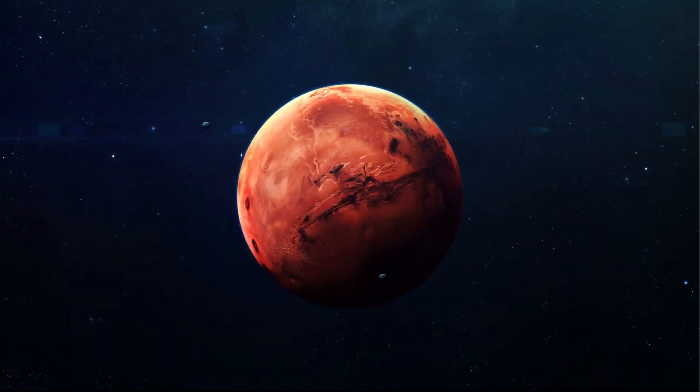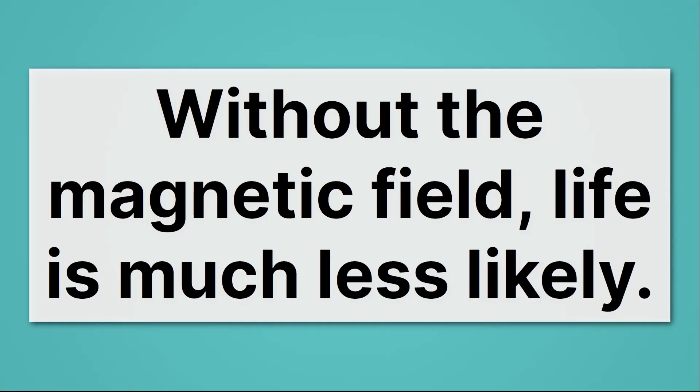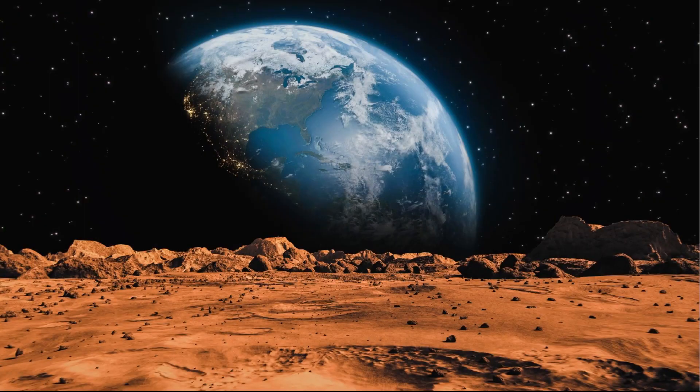That may be one reason Mars is lifeless. Mars doesn't have a magnetic field, and without the magnetic field, life is much less likely. When we compare the surface of Mars, it's barren and lifeless, and the surface of Earth is teeming with life. There are many reasons for this difference, but one that helps support the life of Earth is our magnetic shield.